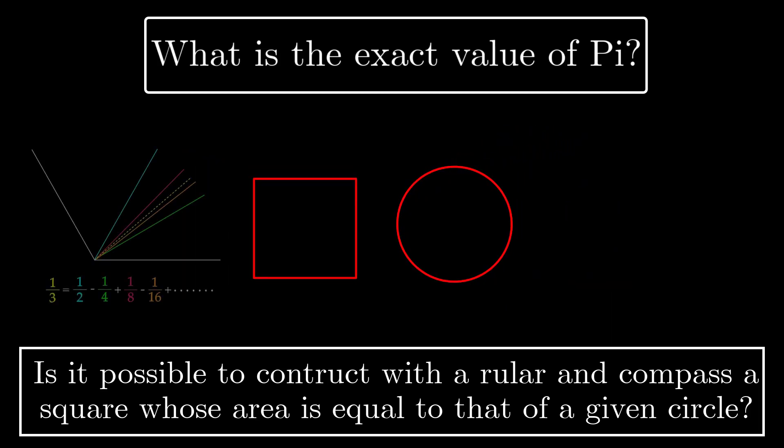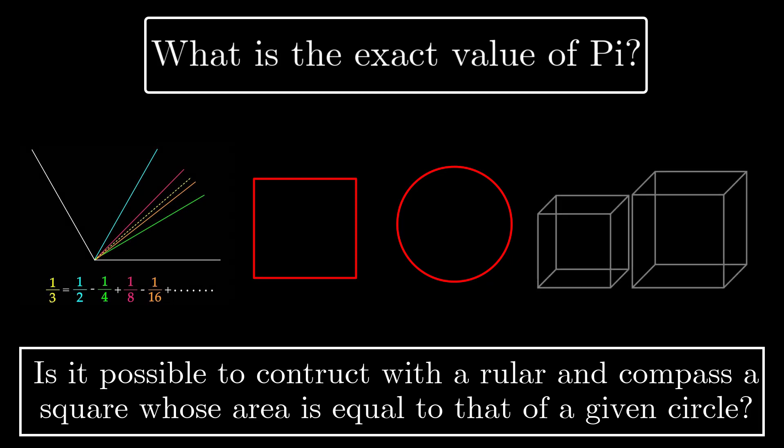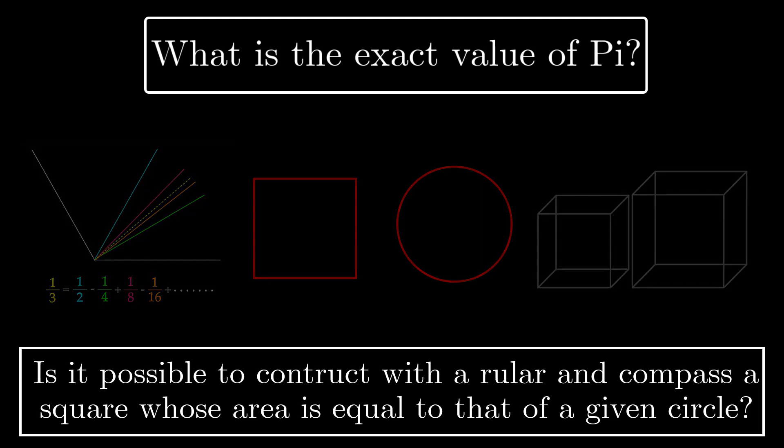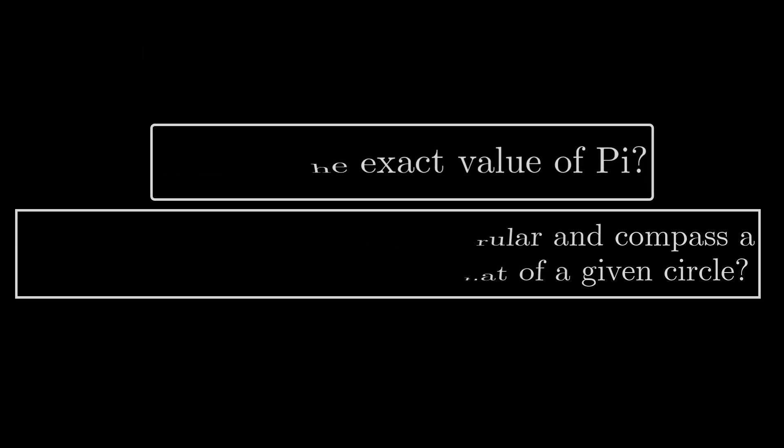Along with the trisection of the angle and the duplication of the cube, it is one of the three famous mathematical problems of antiquity. The problems 1 and 2 are related to each other.